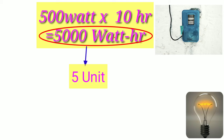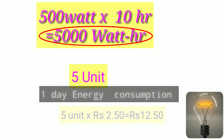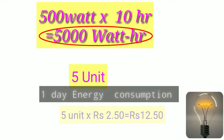Then the unit calculation gives us 5,000 watt-hours. The unit is 2.50, into 2.5, giving 12.50 total. In this video, I will show you how the unit is built.